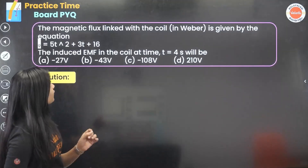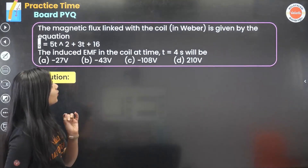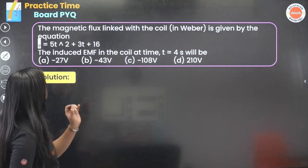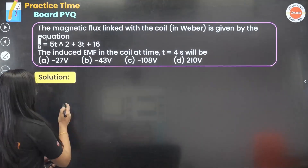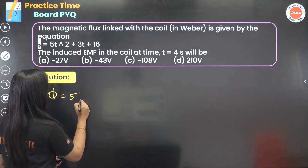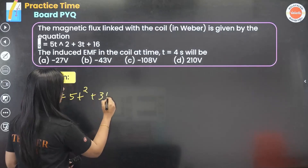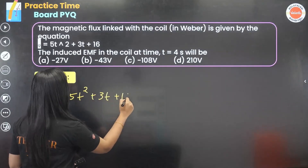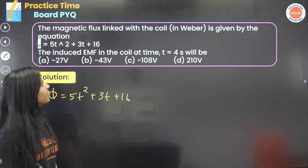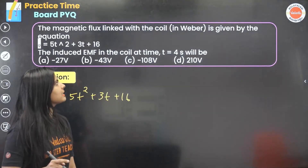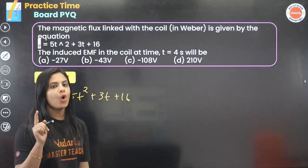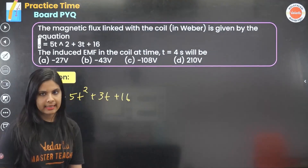The magnetic flux linked with the coil is given by the equation φ = 5t² + 3t + 16. We need to find the induced EMF in the coil at time t = 4 seconds.